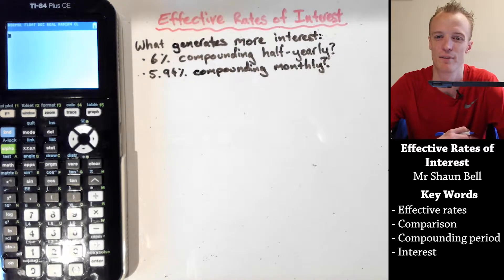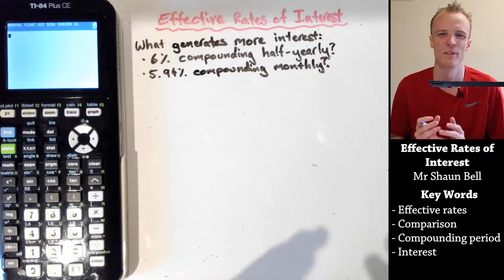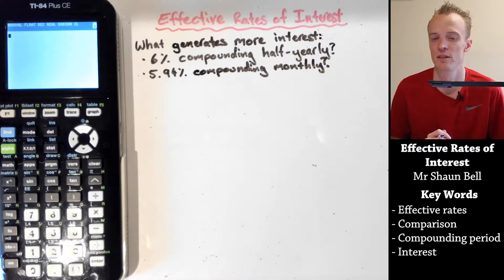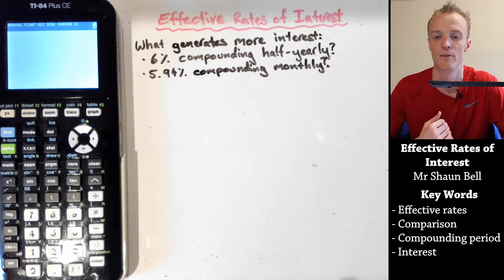What is the effective rate of interest? I want you to consider what sort of account would generate more interest: a 6% interest rate compounding half-yearly or a 5.94% interest rate compounding monthly?